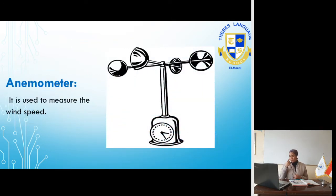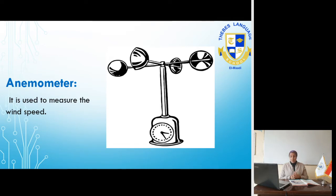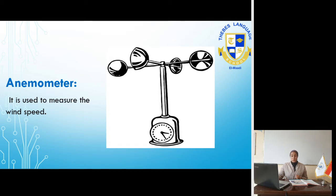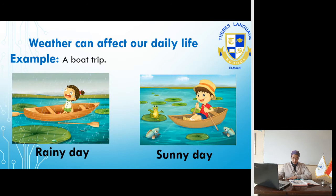We have another device called an anemometer. We have the thermometer, which is used to measure temperature, and we have the anemometer, which is used to measure wind speed — how fast the wind is blowing. This is how it looks like. We also use it to know whether it's a windy day, a little bit windy, or very very windy.